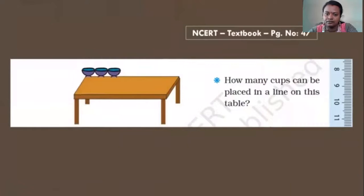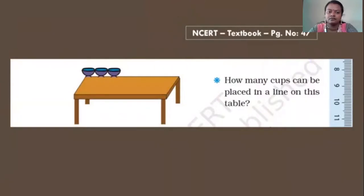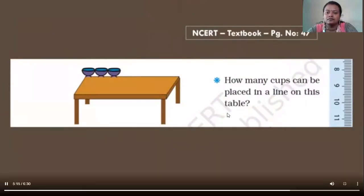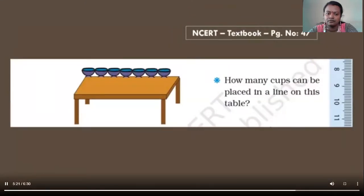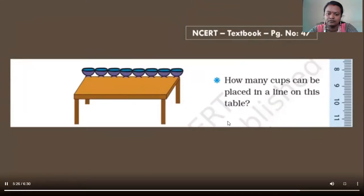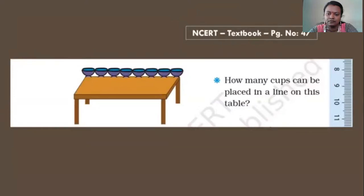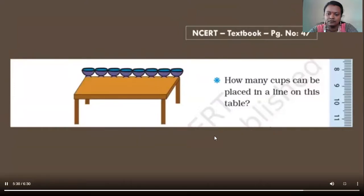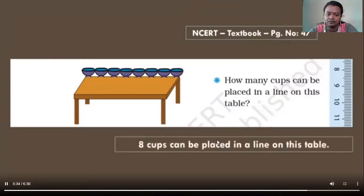Let us see another example. How many cups can be placed in a line on this table? We are going to place the cups in a line and find how many cups can be placed. We could see 8 cups can be placed on this table. We shall also say the length of this table occupies 8 cups.